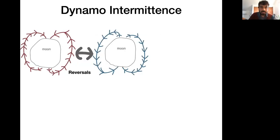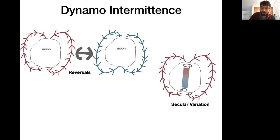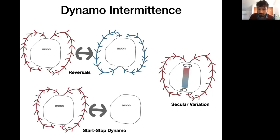These may not be exotic mechanisms. Earth has magnetic reversals and perhaps the Moon underwent similar field reversals with accompanying low-field periods that we just haven't sampled yet. There could be secular variation on the Moon not yet observed. There could also be a start-stop dynamo mechanism, where the Moon oscillated above and below the energy threshold for dynamo activity, extending its longevity and conserving the lunar energy budget.